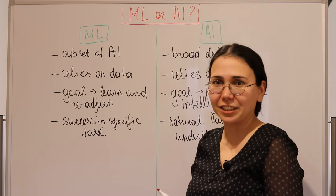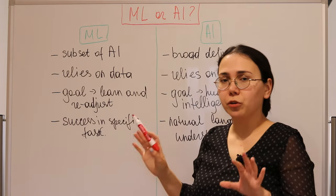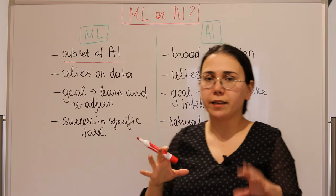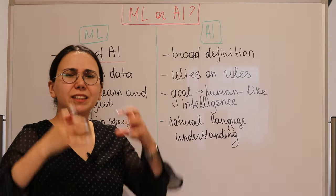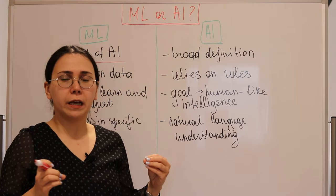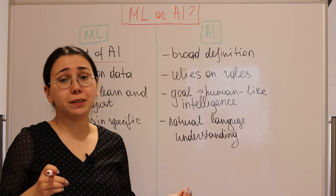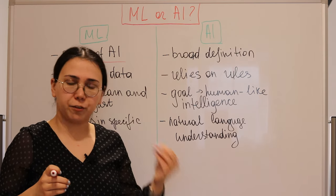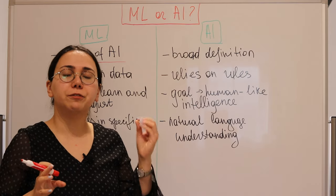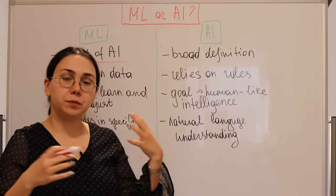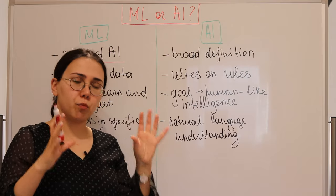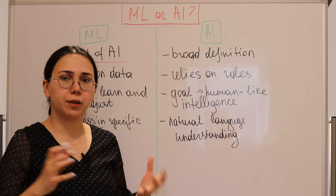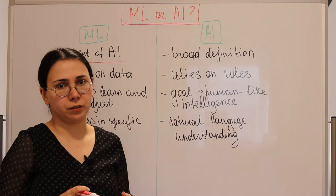Machine learning is often referred to as ML, and AI stands for artificial intelligence. To start with, machine learning is a subset of AI. AI is a very broad topic — it's not something that came to us with ChatGPT. Machine learning has been around since the beginning to middle of the 20th century, and ChatGPT is one of the byproducts of artificial intelligence.